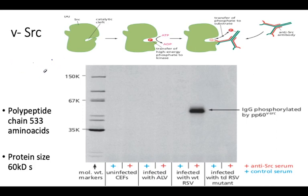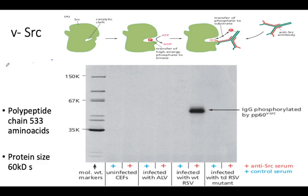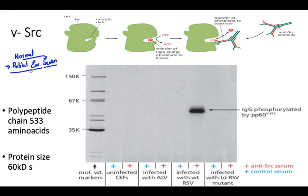We need to use two sets of antibodies meant to identify SARC. Antibody number one was from a normal rabbit — taken from a rabbit's ear with no exposure to any virus — so the serum has no SARC antibody.